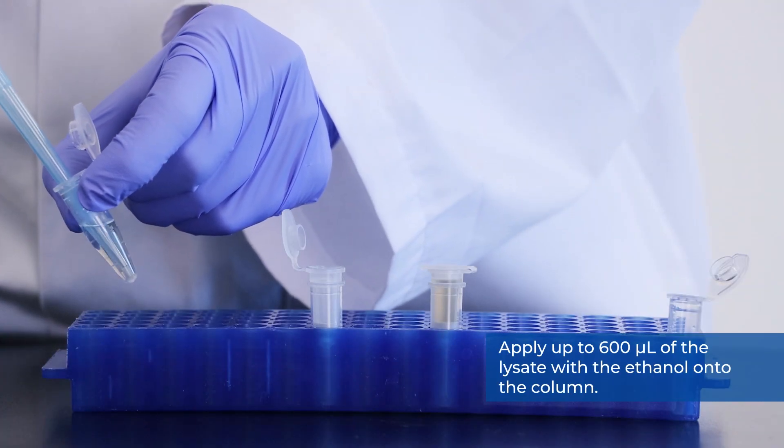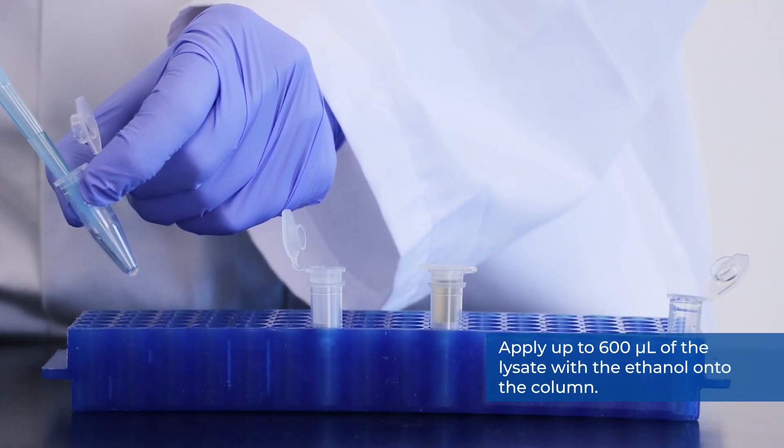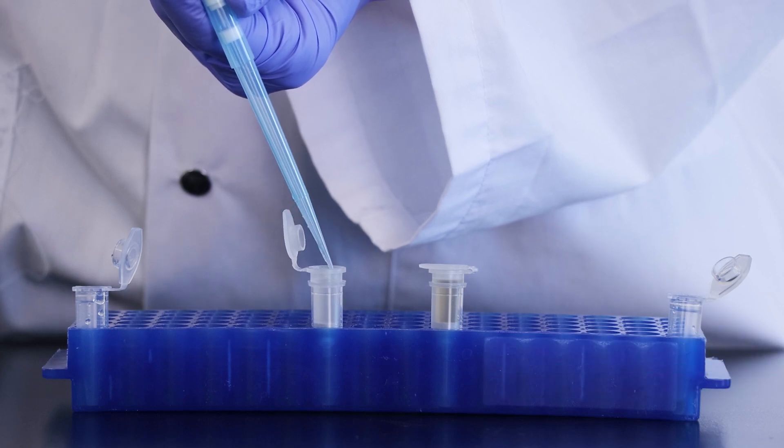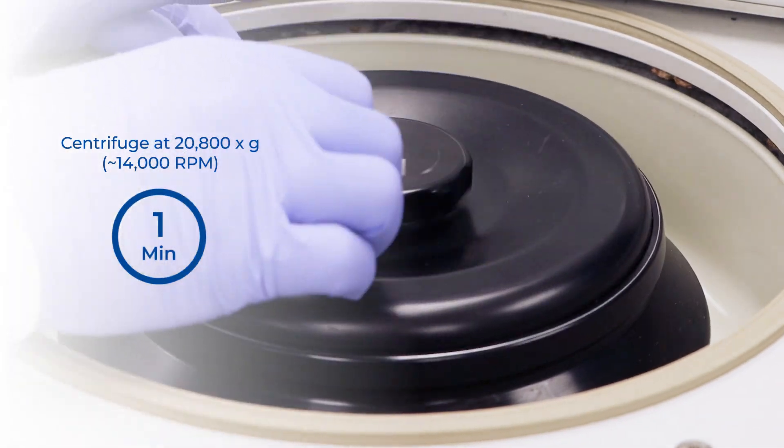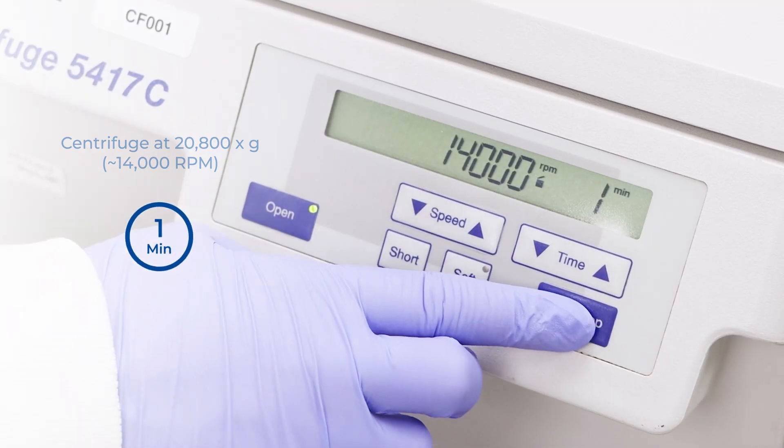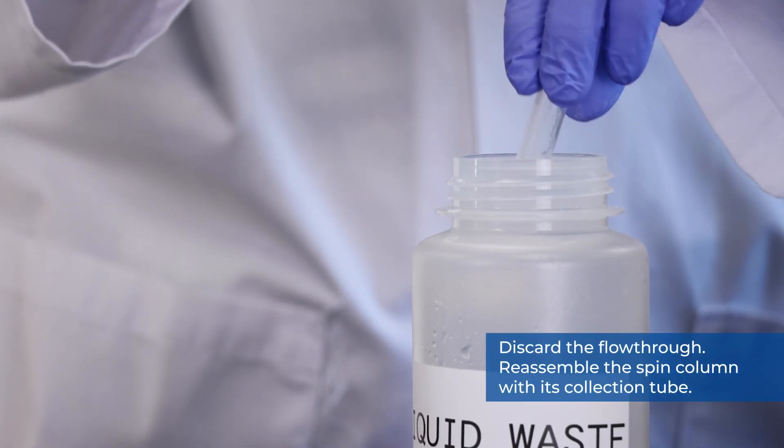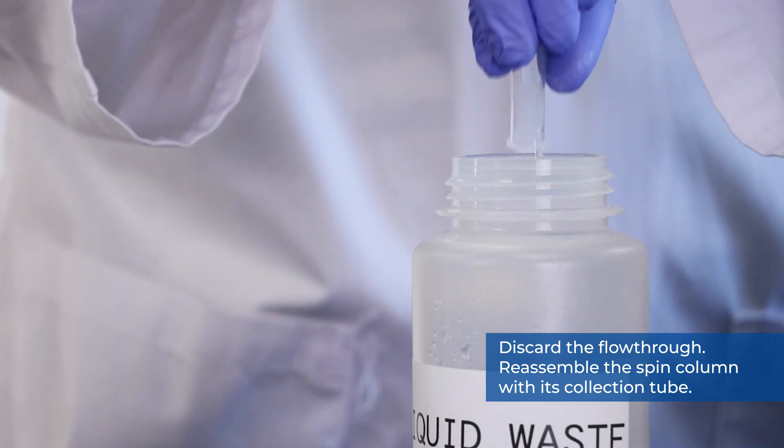Apply up to 600 microliters of lysate with the ethanol onto the column. And centrifuge for 1 minute at 20,800 G or 14,000 RPM. Discard the flow-through and reassemble the spin column with its collection tube.